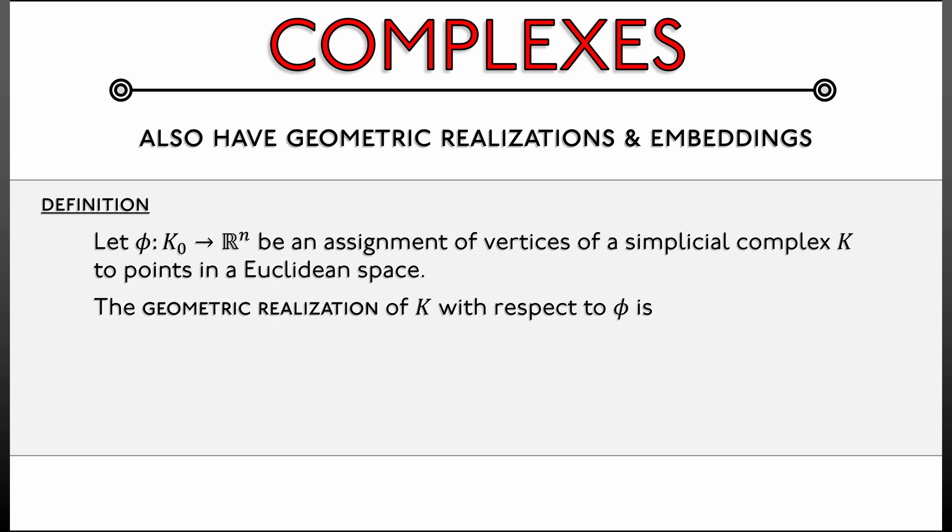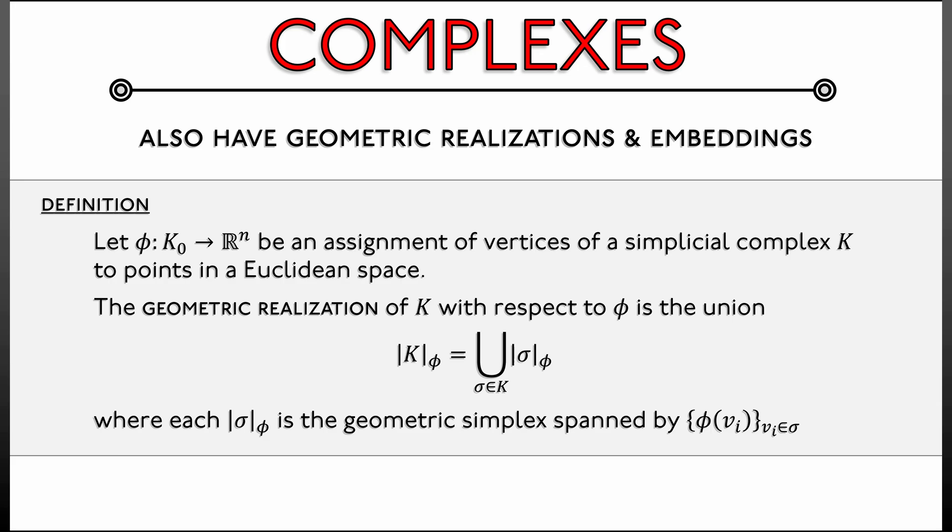Given that φ, that mapping of vertices, the geometric realization of the complex K with respect to φ is the following union. We're going to denote that as |K|_φ. That is the union over all simplices σ in K of the geometric realization of σ with respect to φ, where by that we mean the geometric simplex that is spanned by the vertices, by the points φ(vᵢ) for vᵢ the vertices in the simplex σ. That sounds kind of complicated, but it's really just taking a collection, a union of geometric simplices, one for each simplex in the complex.